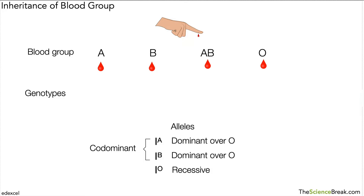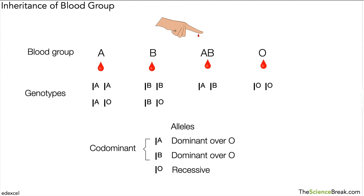So how would we write the genotypes — the combination of alleles — for each blood group? For blood group A it could be either I^A I^A or I^A I^O, because A is dominant over O. For blood group B it's either I^B I^B or I^B I^O. There's only one possibility for blood group AB: I^A I^B. And for blood group O there's only one possibility — we have to have two O alleles together because they are recessive.